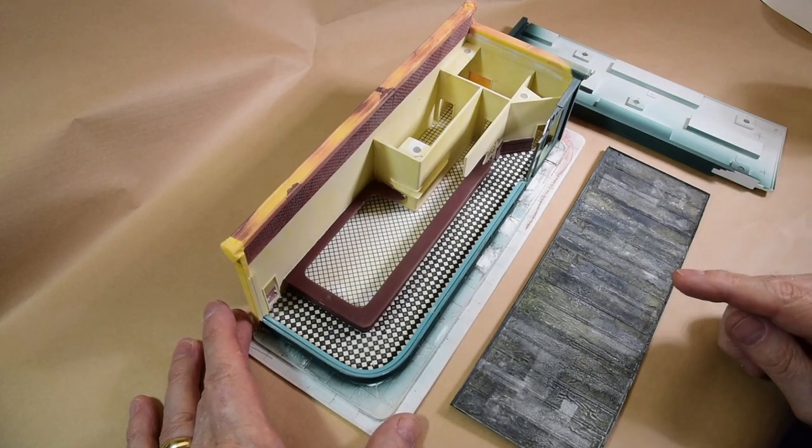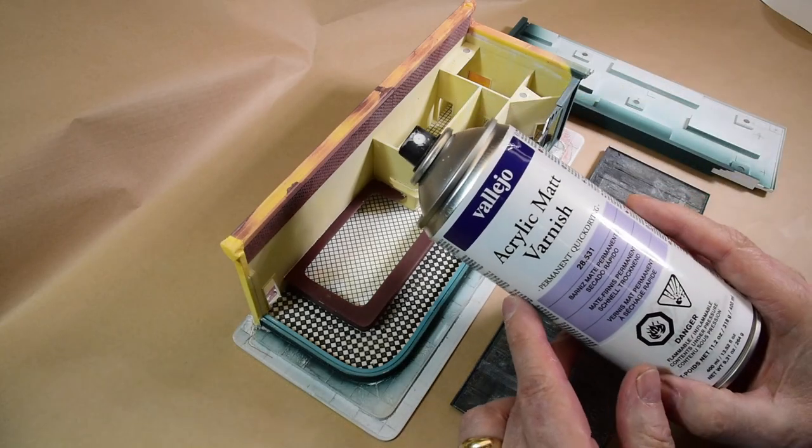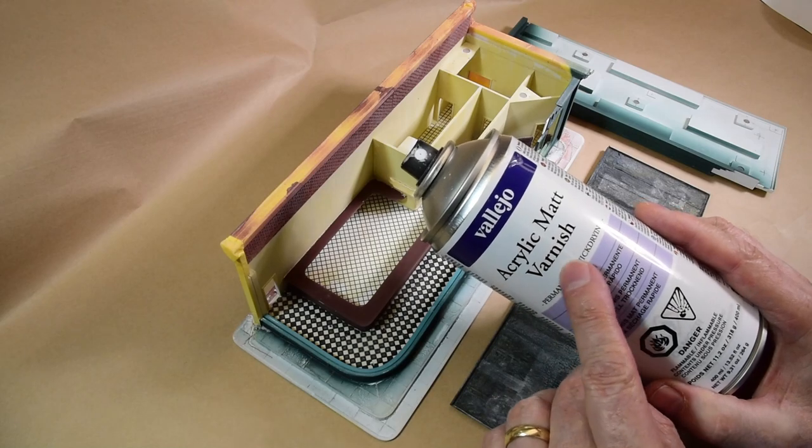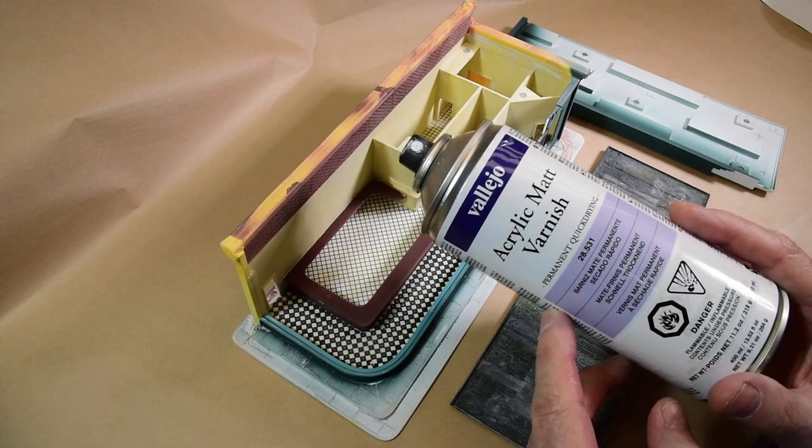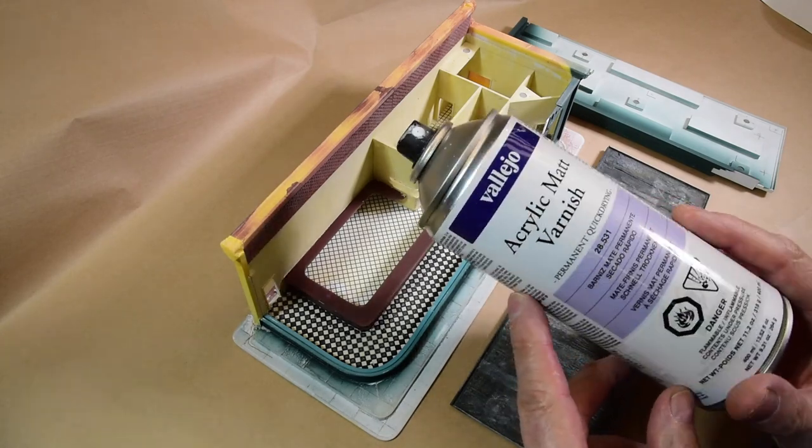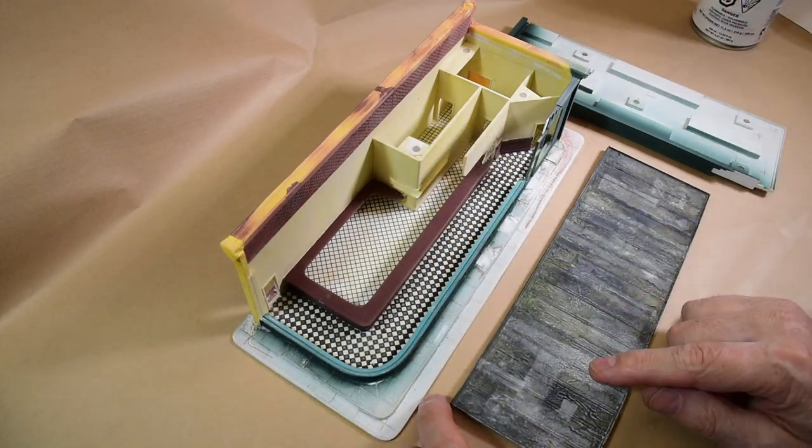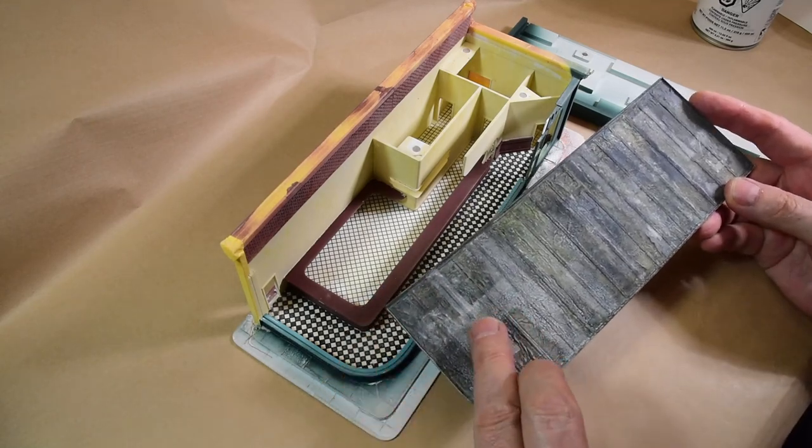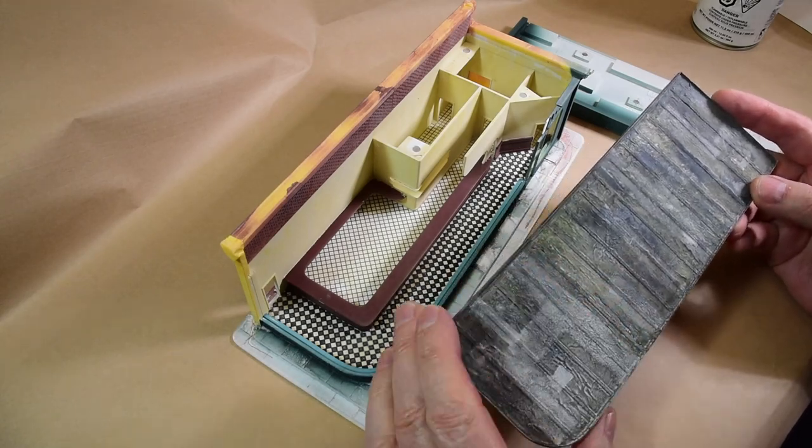Now sometimes anomalies occur, and I want to point out what happened with this. I've endorsed this product before and still really like it - this Vallejo acrylic matte varnish. I use their satin and gloss, and I'd say 99 times out of 100 I don't have any issues with it. But every once in a while I get this chalky kind of effect after I spray a model.